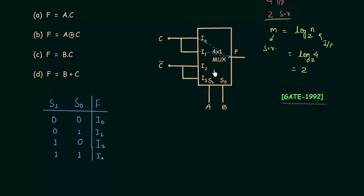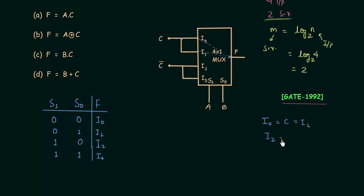In this question, i0 is equal to c, i1 is also equal to c, i2 is equal to c complement, and i3 is also equal to c complement.